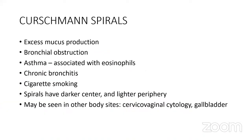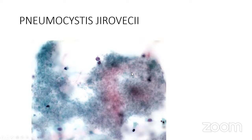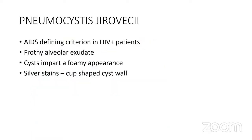Curschmann spirals are seen in the respiratory tract but may also appear in cervical/vaginal cytology and gallbladder whenever there are glandular cells with mucus production. Pneumocystis infection on BAL appears very frothy with small dots. Perform silver stains to highlight the cup-shaped organisms. It is one of the AIDS-defining criteria in HIV-positive patients.